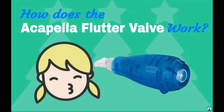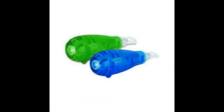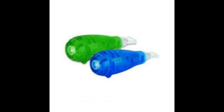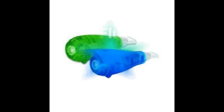The flutter valve combines high-frequency oscillation and positive expiratory pressure to facilitate the removal of secretions. The flutter valve will help with sputum, inflammation, microbiology, and transport of respiratory secretions in patients with bronchiectasis. The flutter is a small handheld device that is used to remove mucus from the lungs.